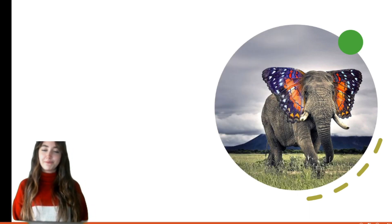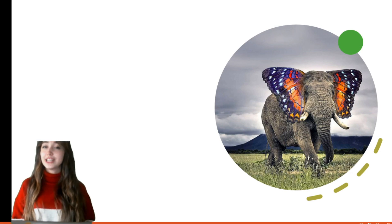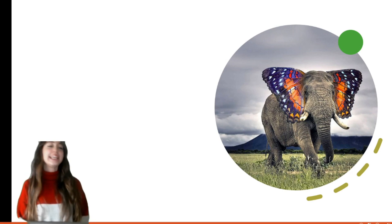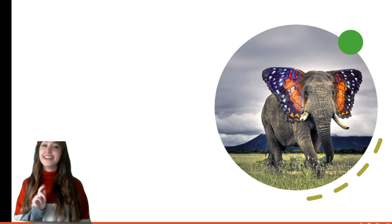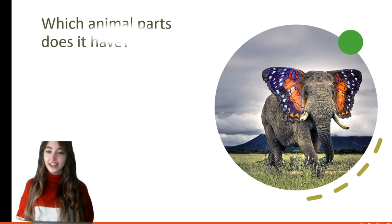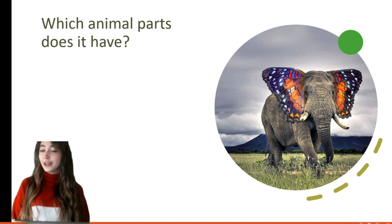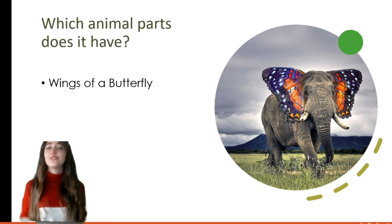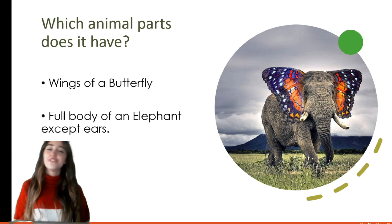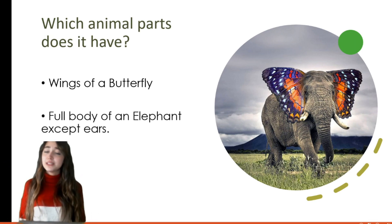Hmm, this one looks beautiful! Which animals are mixed up in this picture? Yes — a butterfly and an elephant! Which animal parts does it have? It has the wings of a butterfly and the full body of an elephant, except the ears.